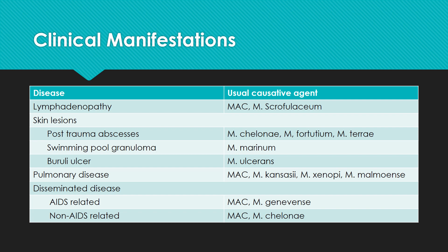Let's talk about the clinical manifestations. Here is the list of diseases that can be caused by Non-Tuberculous Mycobacteria. First, lymphadenopathy, which can be caused by Mycobacterium avium intracellulare complex (MAC) and Mycobacterium scrofulaceum. Then skin lesions: the first is post-trauma abscess caused by Mycobacterium chelonae, then swimming pool granuloma also called fishtank granuloma caused by M. marinum, and Buruli ulcer caused by M. ulcerans. Then respiratory disease, caused by the Mycobacterium avium intracellulare complex.